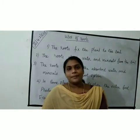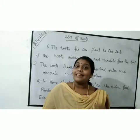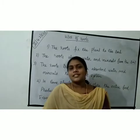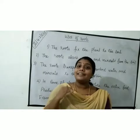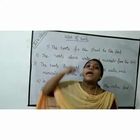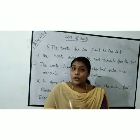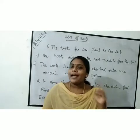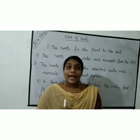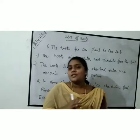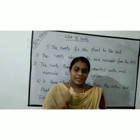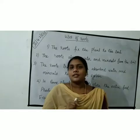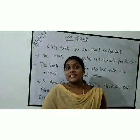Root system means the parts of the plant that are under the soil. Shoot system means the part of the plant that is above the soil. There are two types of roots: tap root and fibrous root. The shoot system consists of leaves, stem, flowers, seeds, and buds.